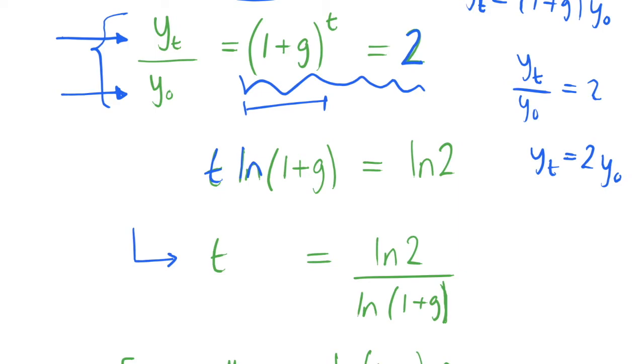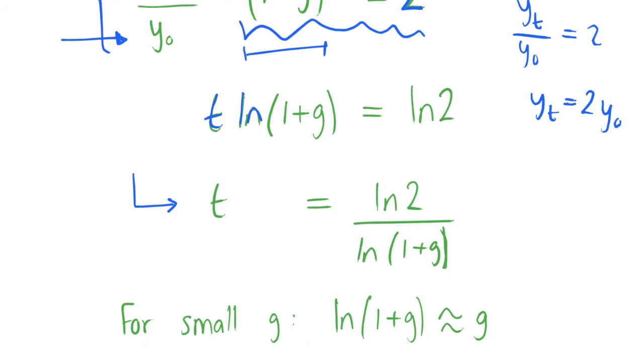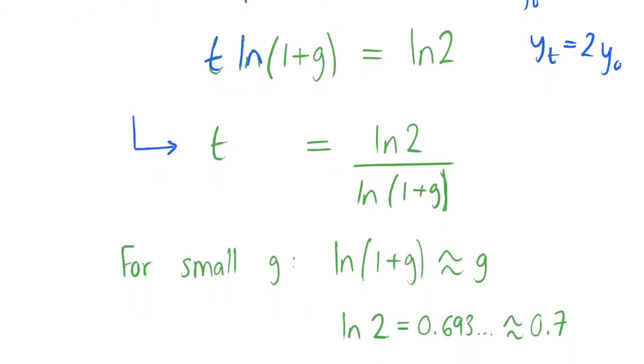Now we're going to use an approximation, so this isn't actually an exact relationship—it's not going to be exactly 70 over g—but it's very close. If we ran some numbers and did some numerical examples, we'd see that it pretty much does hold exactly when we have small values of g. The first approximation is noting that the natural log of 1 plus g is roughly equal to g for small g's.